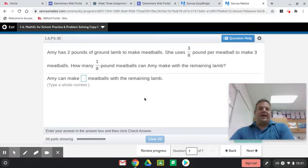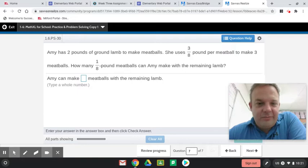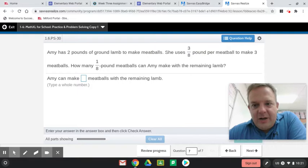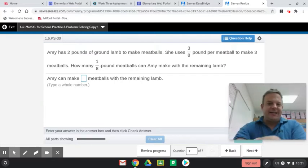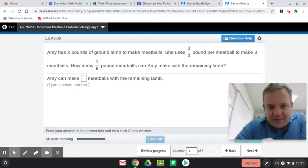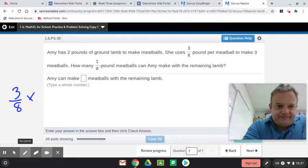All right, I'm really glad this one's here. Amy has 2 pounds of ground lamb to make meatballs. She uses 3 eighths pound per meatball to make 3 meatballs. So, 3 of them equals 3 eighths. How many 1 eighths? So, when it says how many, just like we did in our last video, how many 1 eighths fit in? That means that this is the divisor. But this is a multi-step problem. So, first, we have to do 3 eighths times 3 to figure out how much meat we took up of the 2 pounds.